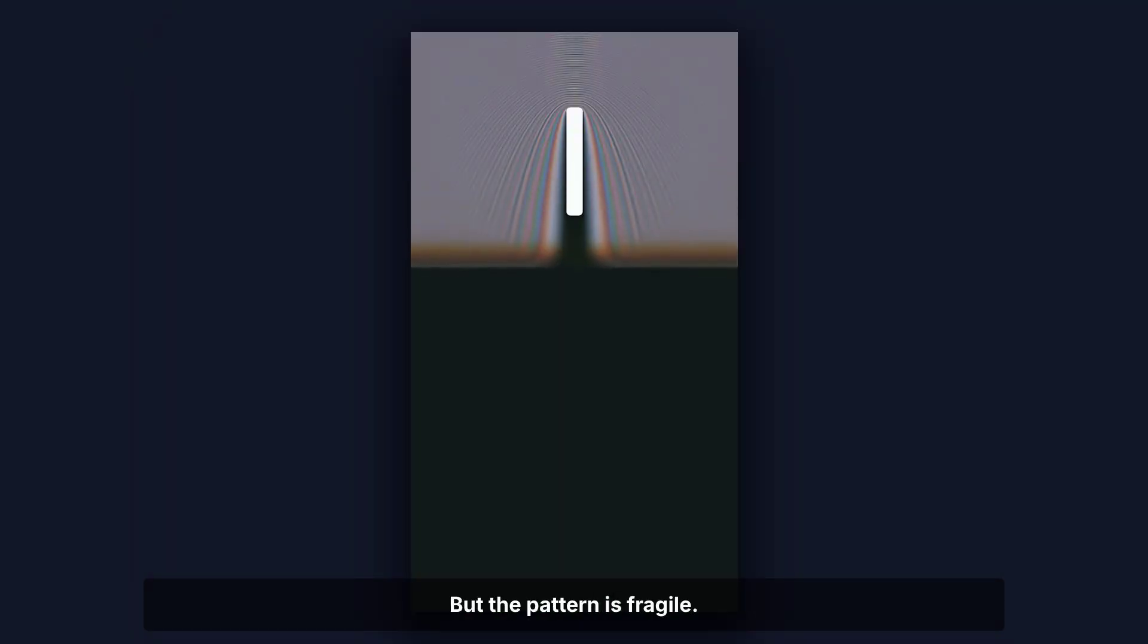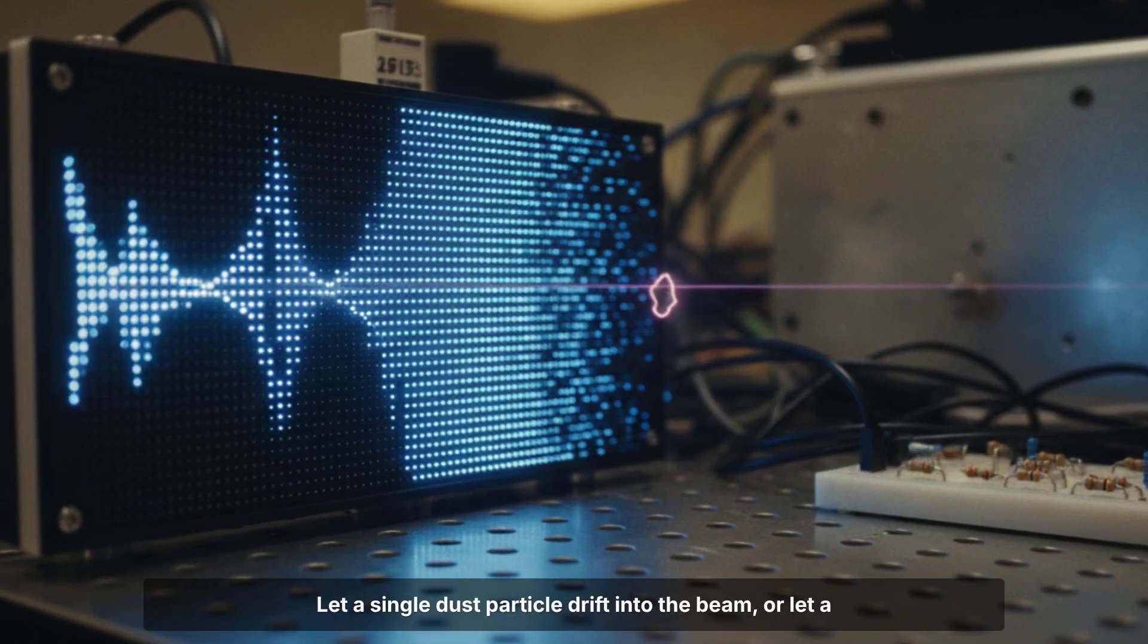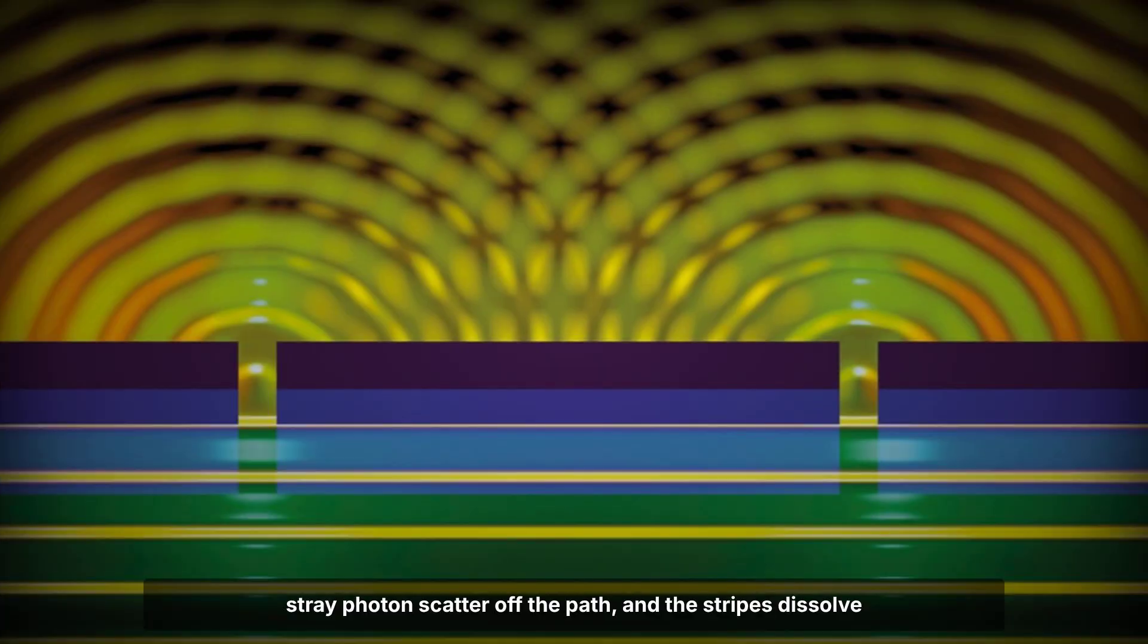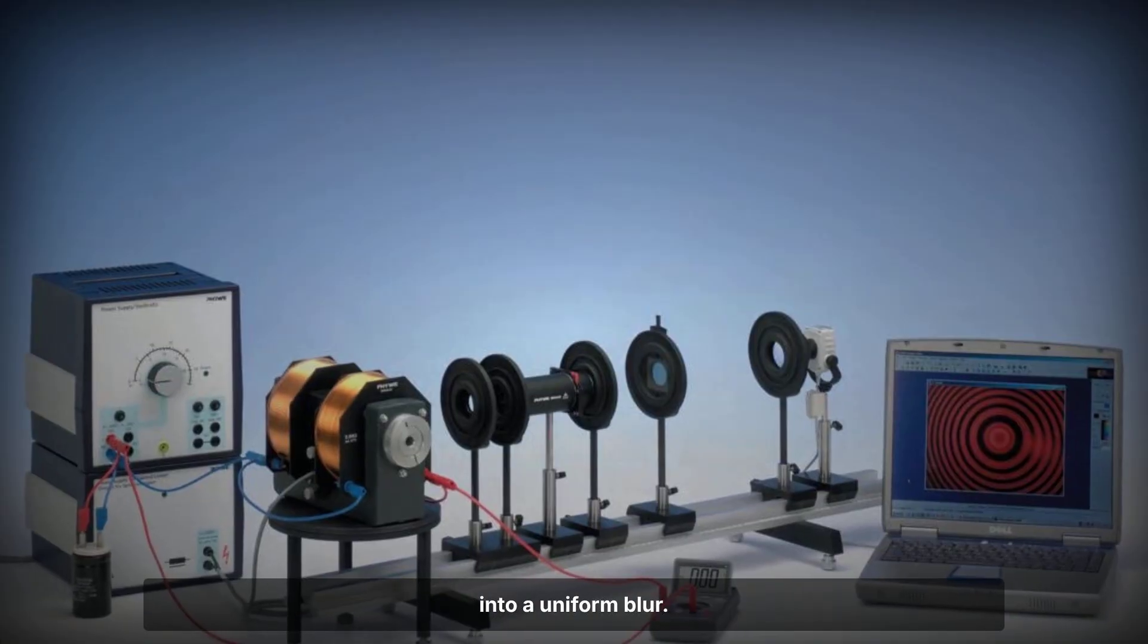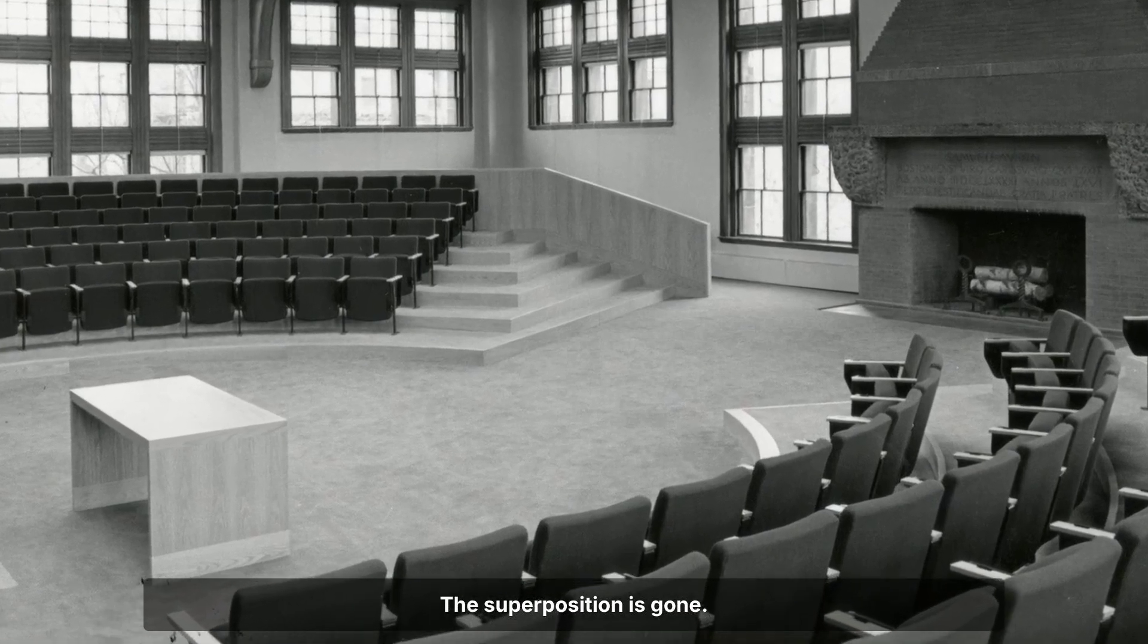But the pattern is fragile. Even the faintest brush with the outside world can erase it. Let a single dust particle drift into the beam, or let a stray photon scatter off the path, and the stripes dissolve into a uniform blur. The interference vanishes. The superposition is gone.